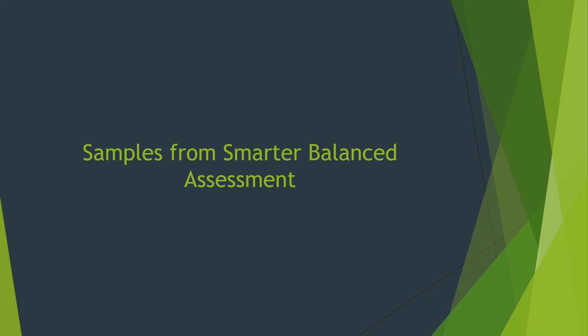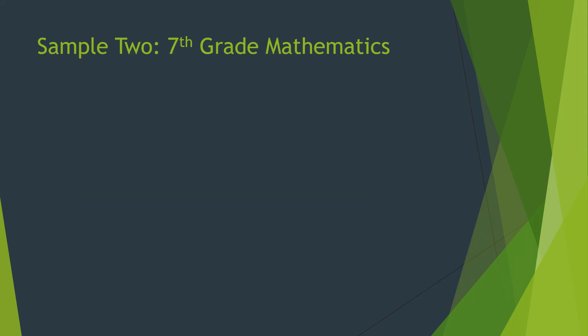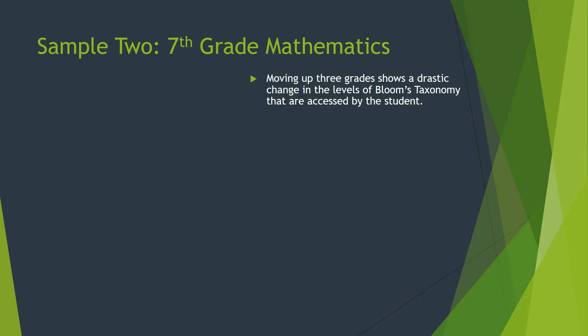Let's look at some samples from the Smarter Balanced Assessment. The first sample is a fourth grade mathematics problem. It asks a student to look at a summer reading list and convert a key where one book graphic equals two books read into another graphic using a different key to express the same information. Students must understand the laws of multiplication and then apply them to build a new graph. This reaches more than one level of Bloom's Taxonomy, but doesn't go much higher than the first two levels — understanding and remembering.